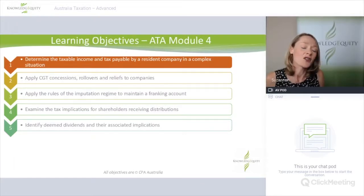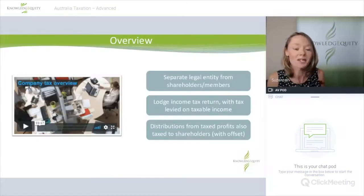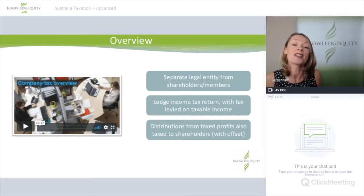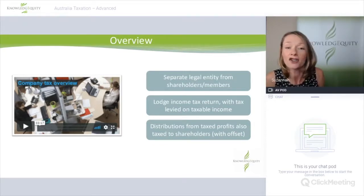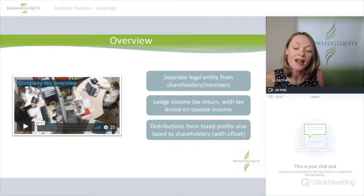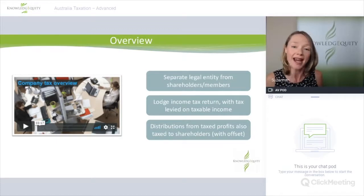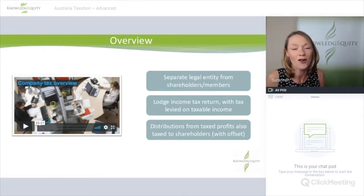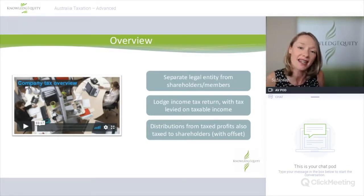Let's look at the first learning objective: determining taxable income and tax payable by a resident company. Companies are separate legal entities from their shareholders and members, and they are required to lodge a company tax return and pay tax on their taxable income. That's different from a trust, which lodges its own tax return but isn't itself liable for tax. Distributions from profits taxed in the company are also taxed to shareholders, but we have the franking credit offset to prevent double taxation.